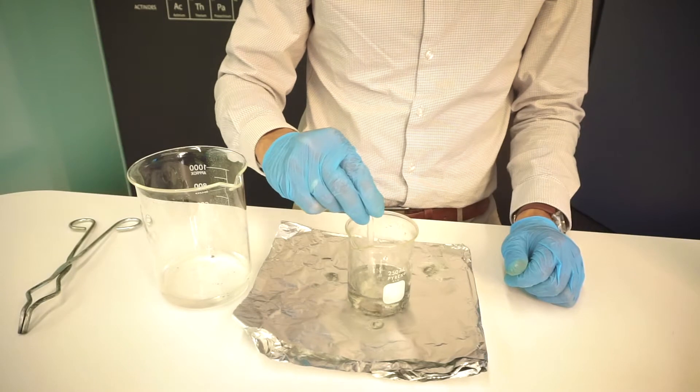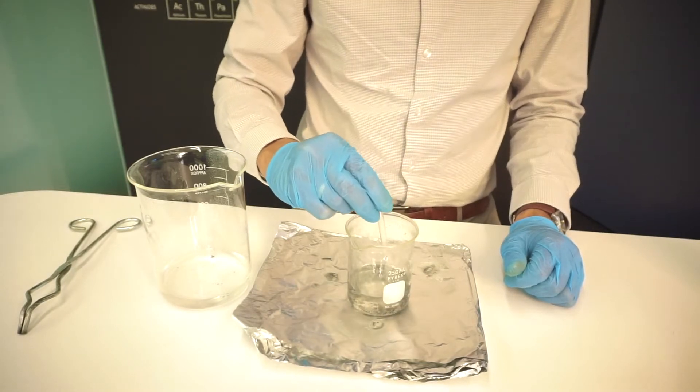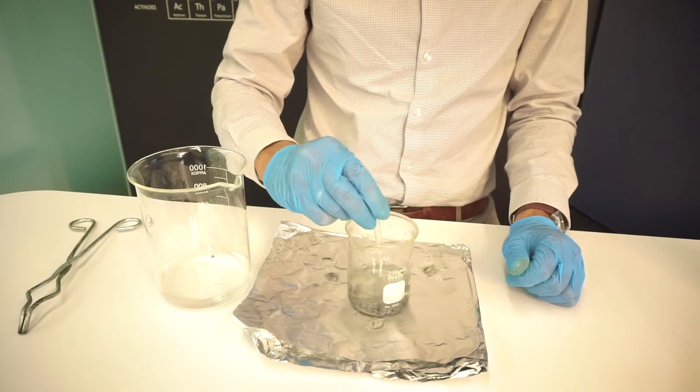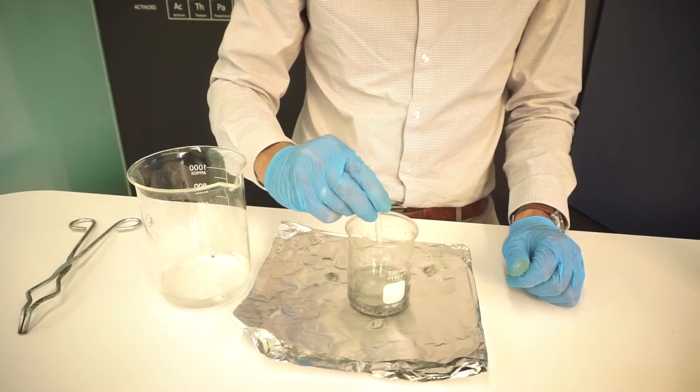We made this solution of sodium zincate using water and sodium hydroxide, which is a strong base, and zinc metal. That's the gray stuff you see floating around here.